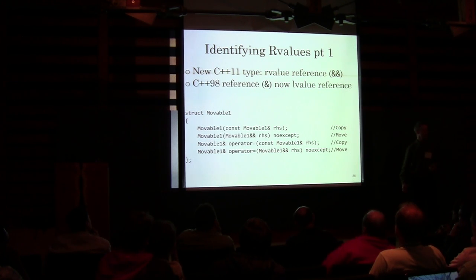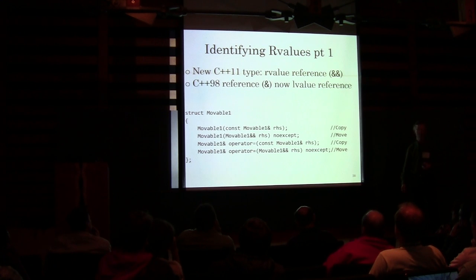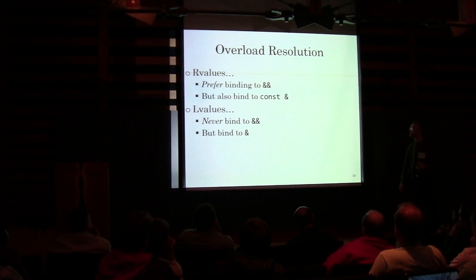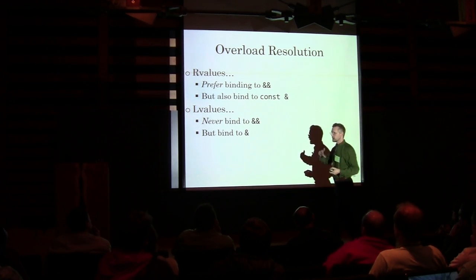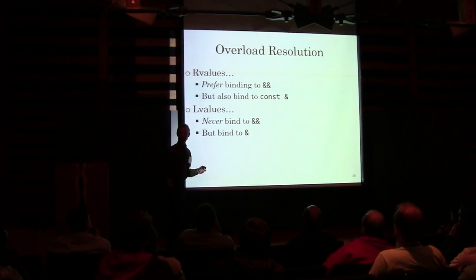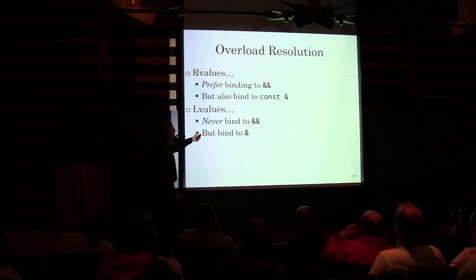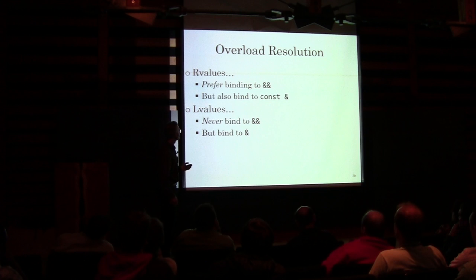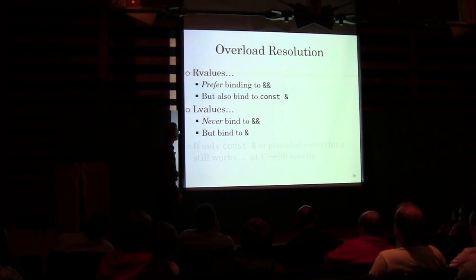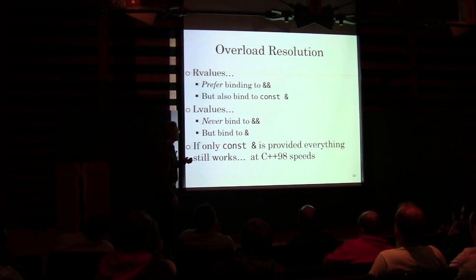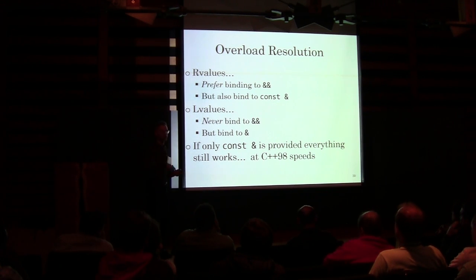What we're going to do with those is overloading, in order to distinguish between what's getting passed in — is it an R-value or an L-value? If an R-value is coming in, an R-value will prefer binding to a double ampersand, but it will also bind to a const L-value. L-values will never bind to a double ampersand. If you don't add any double ampersands to your interfaces, everything will still work, everything will behave the same as before — you just won't get the speed improvements.